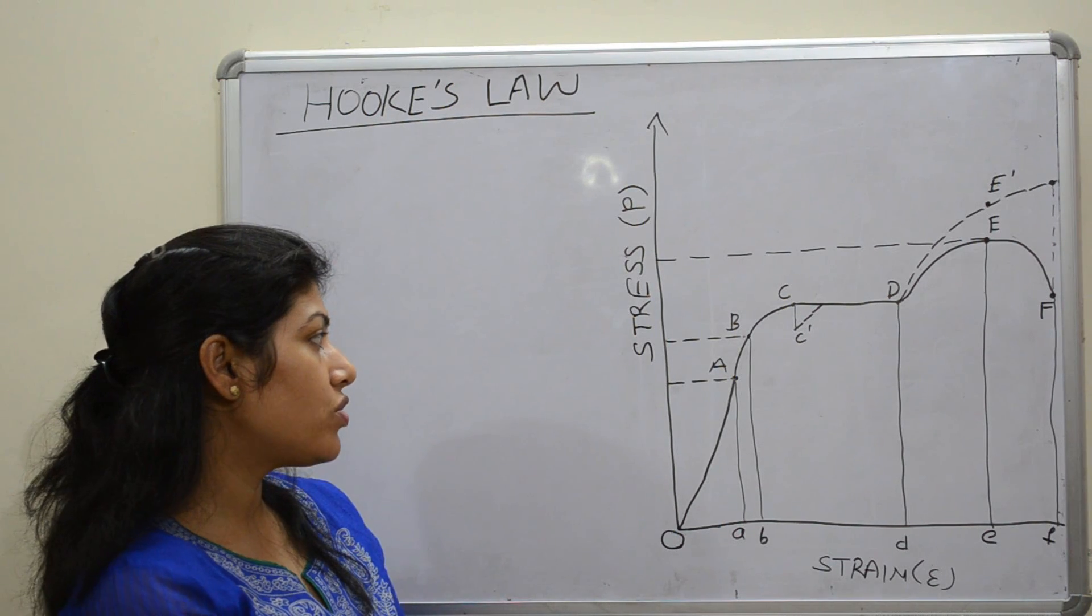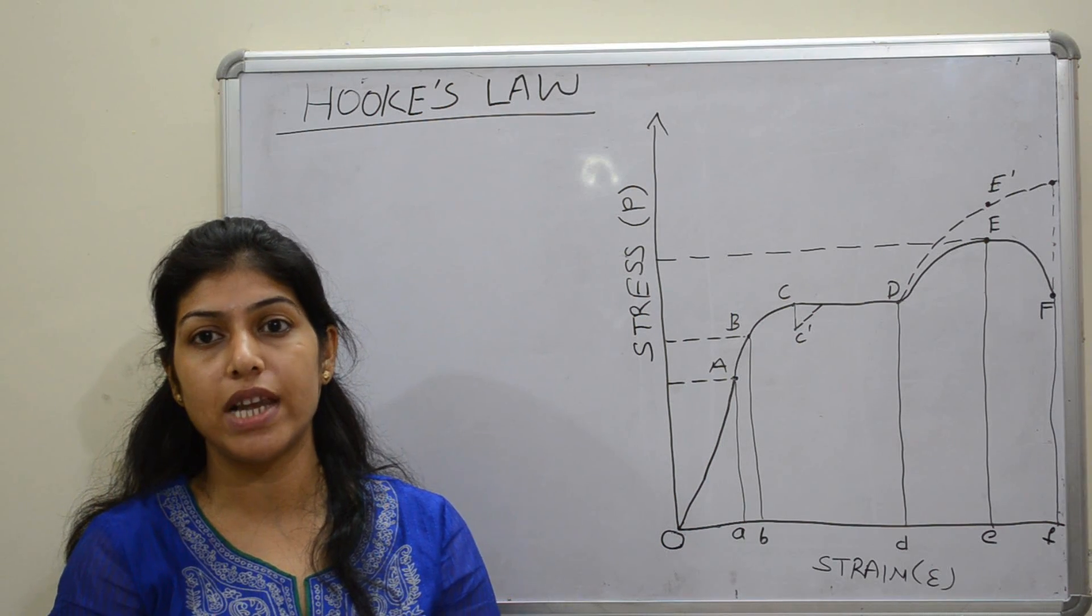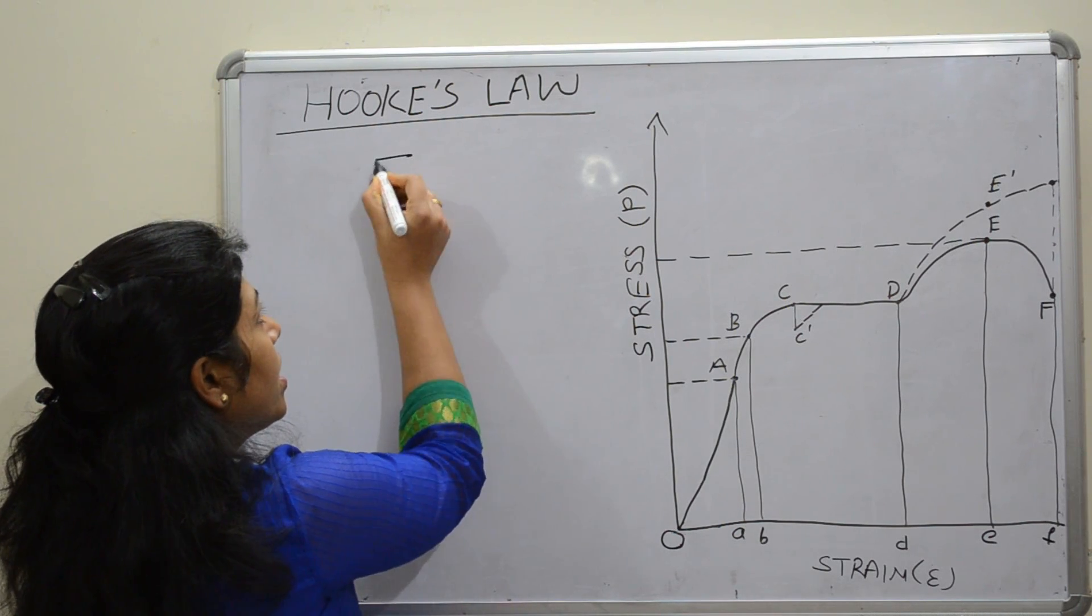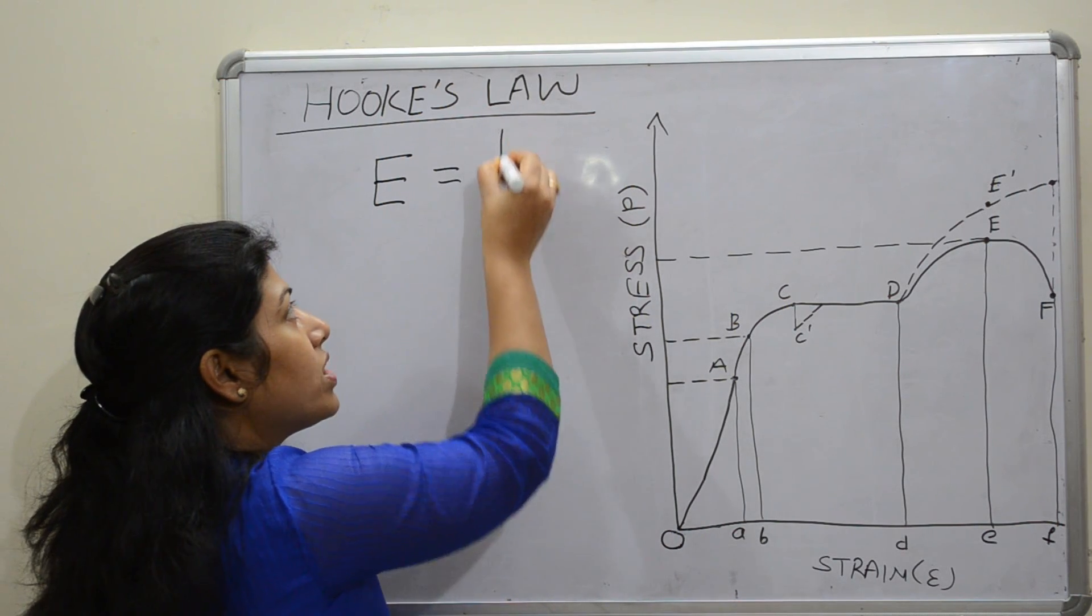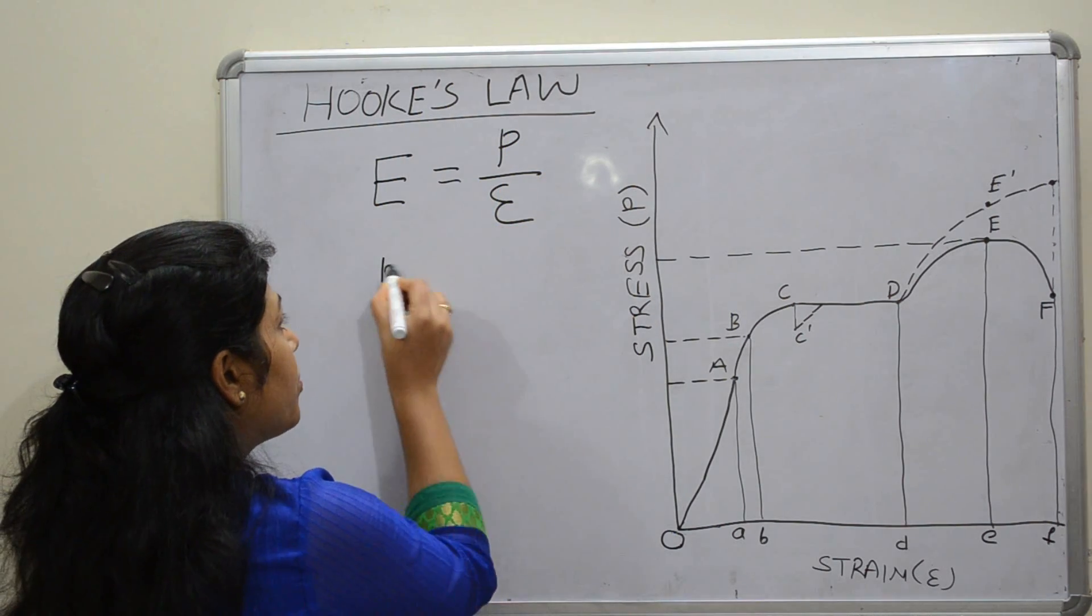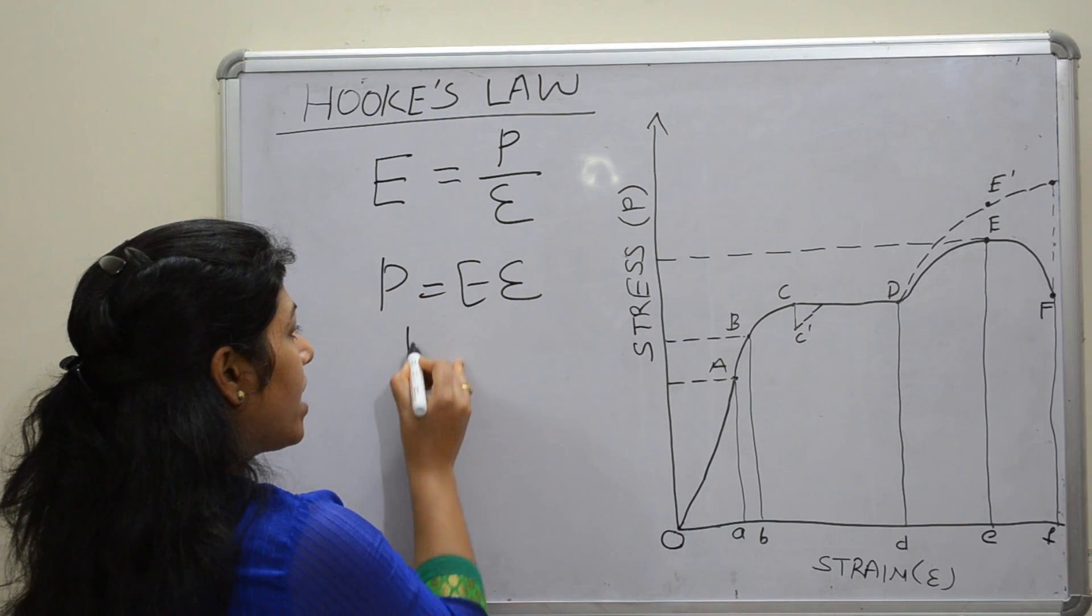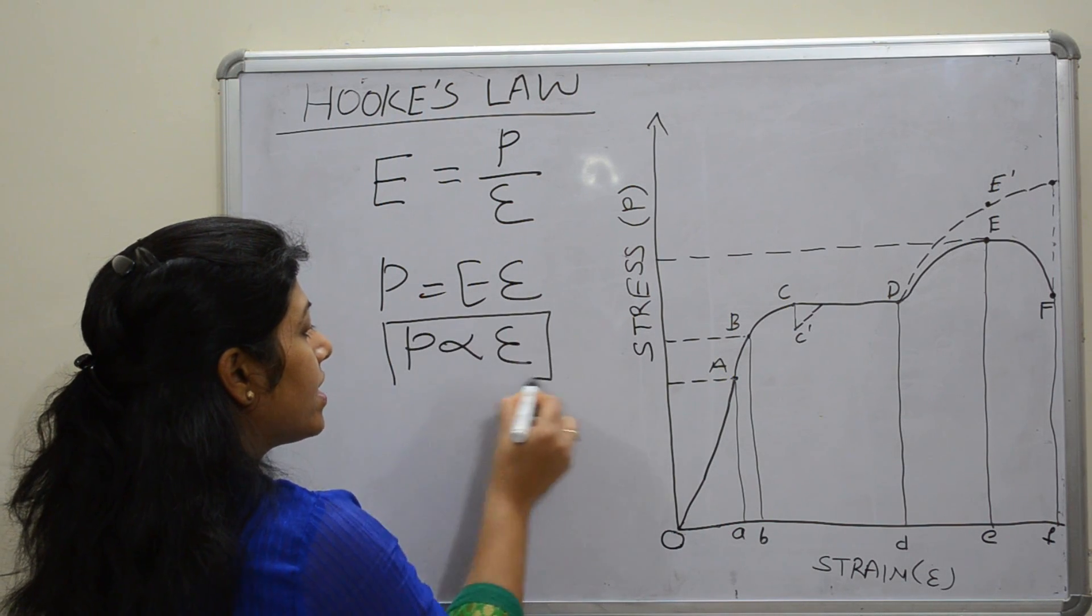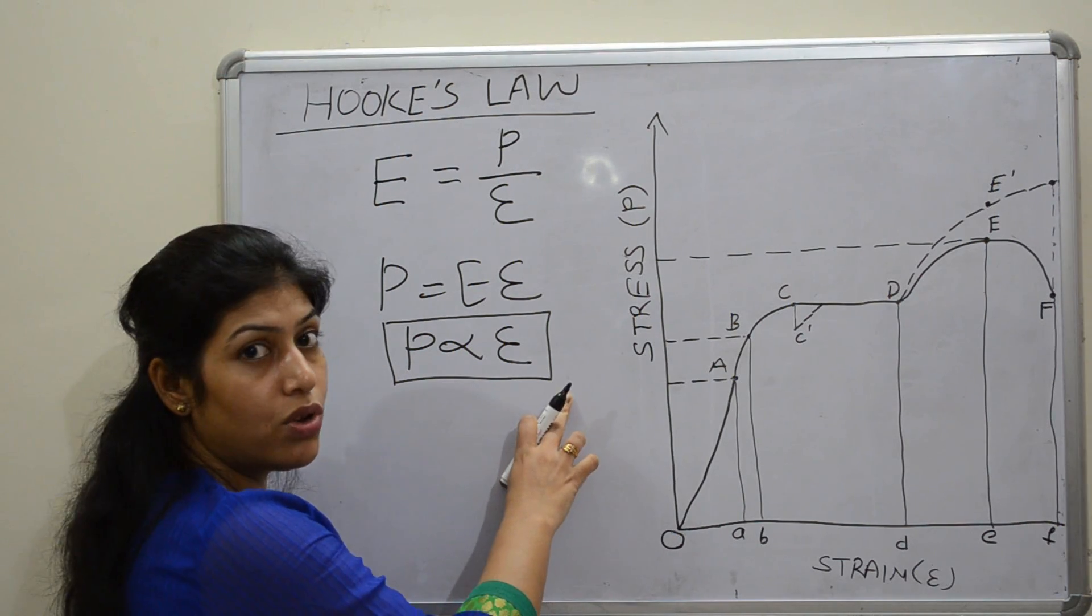The slope of this stress-strain diagram OA is generally known as modulus of elasticity, denoted by capital E. This is the slope of the stress-strain diagram, so this will be the ratio of stress by strain. We can write stress equal to E times strain. Here we can write stress is proportional to strain also because E is a constant element.